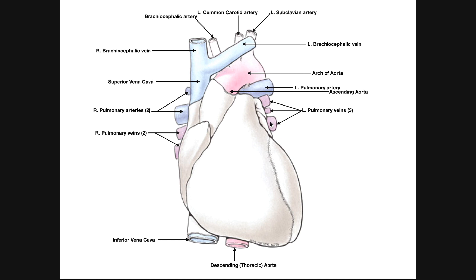We also have the pulmonary veins — there are multiple of these. Here are two right pulmonary veins and three left pulmonary veins. These deliver oxygenated blood from the lungs back to the left atrium. The right pulmonary veins traverse posteriorly before dumping into the left atrium.